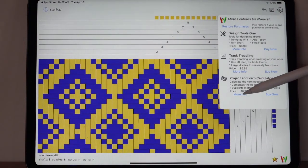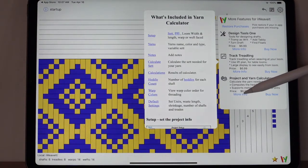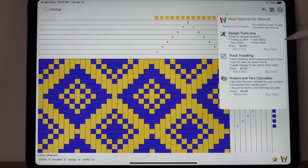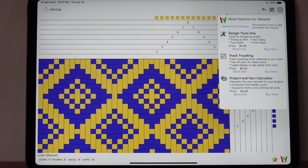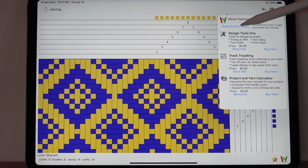Track treadling, project and yarn calculator. If you have loaded it onto a new device and you want to get the add-ons that you've already purchased, then pick restore purchases at the top.